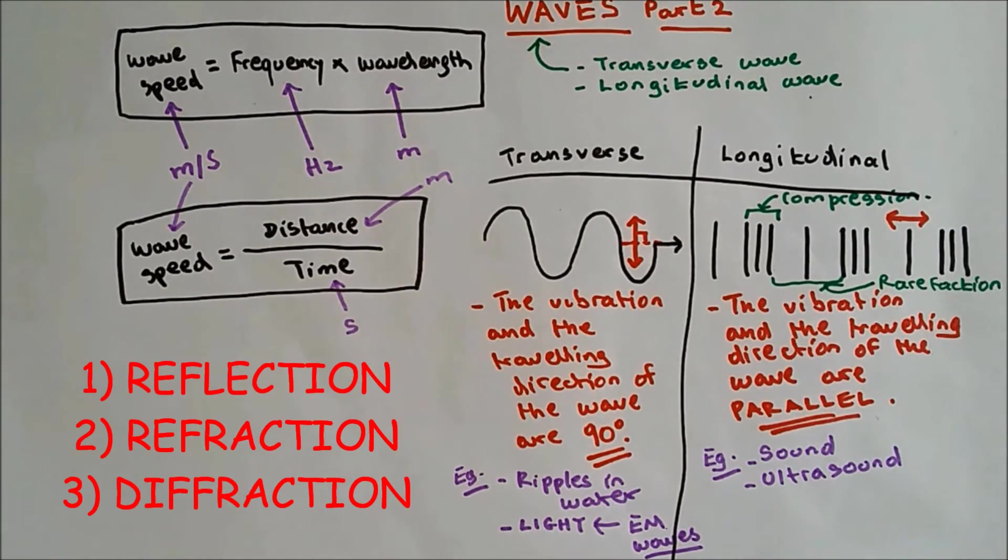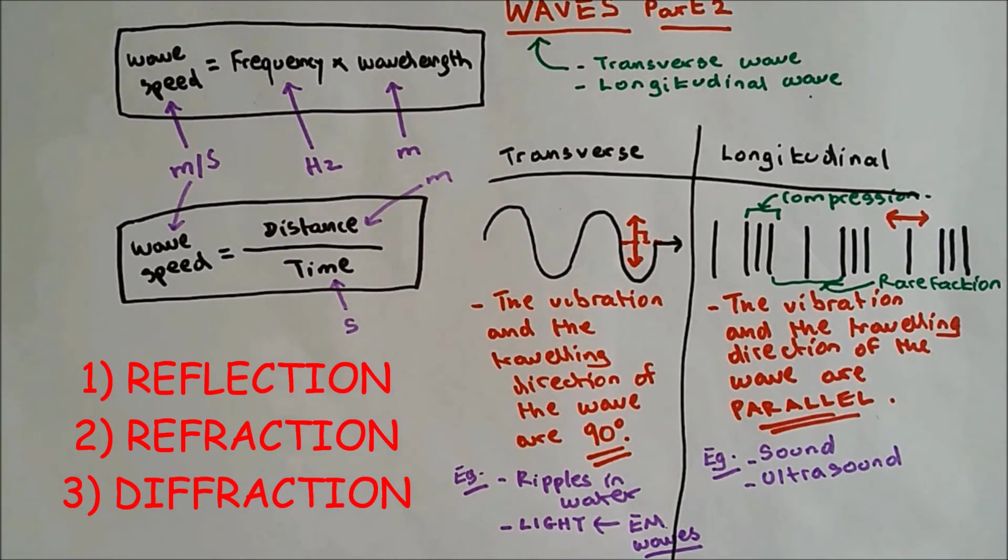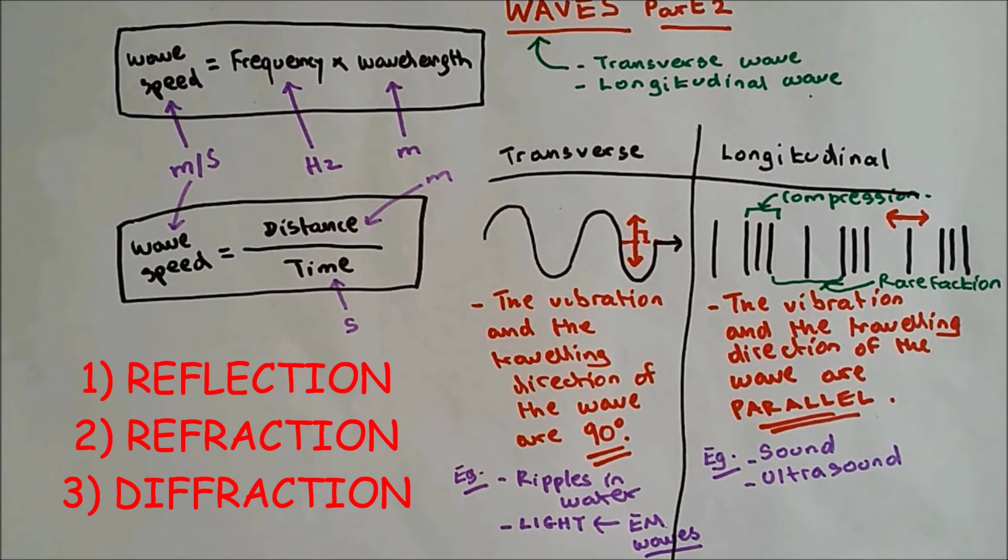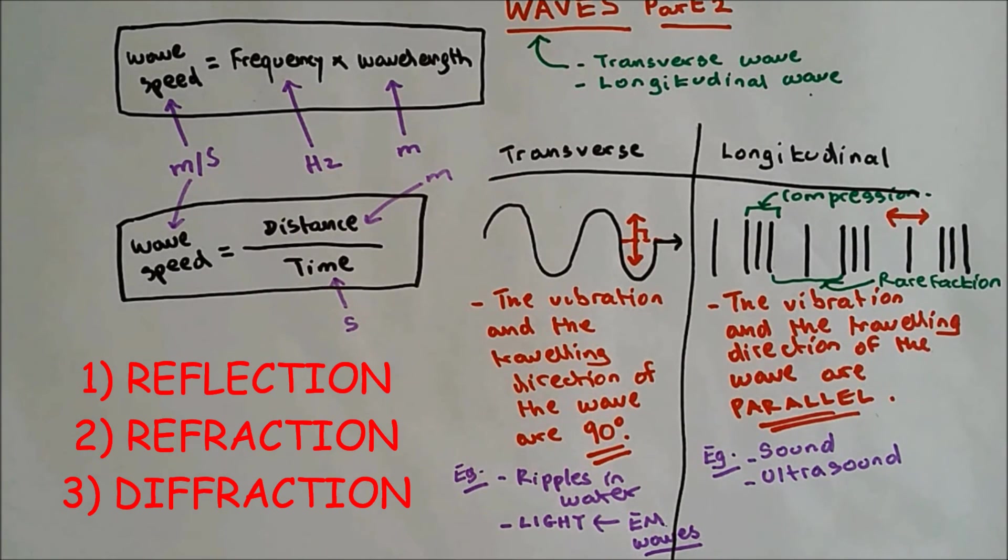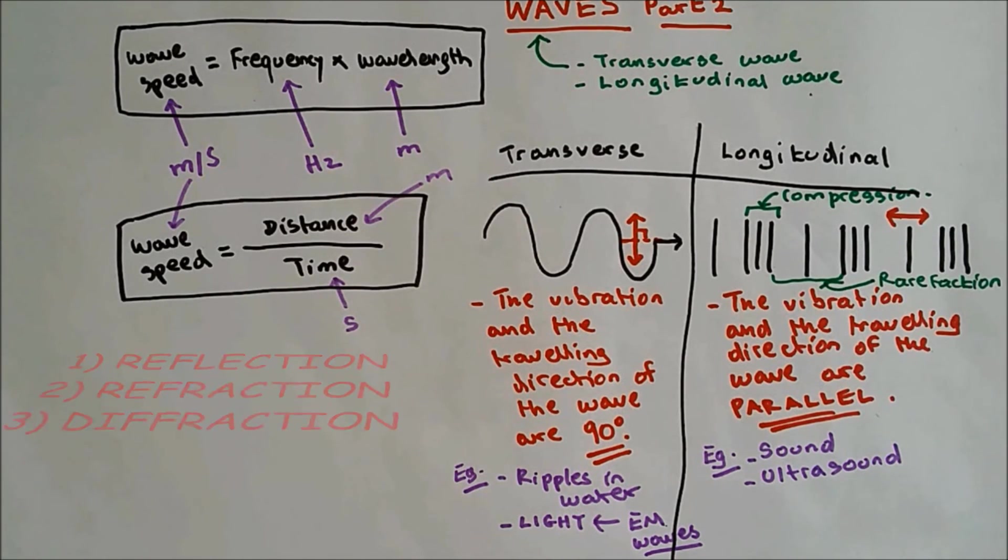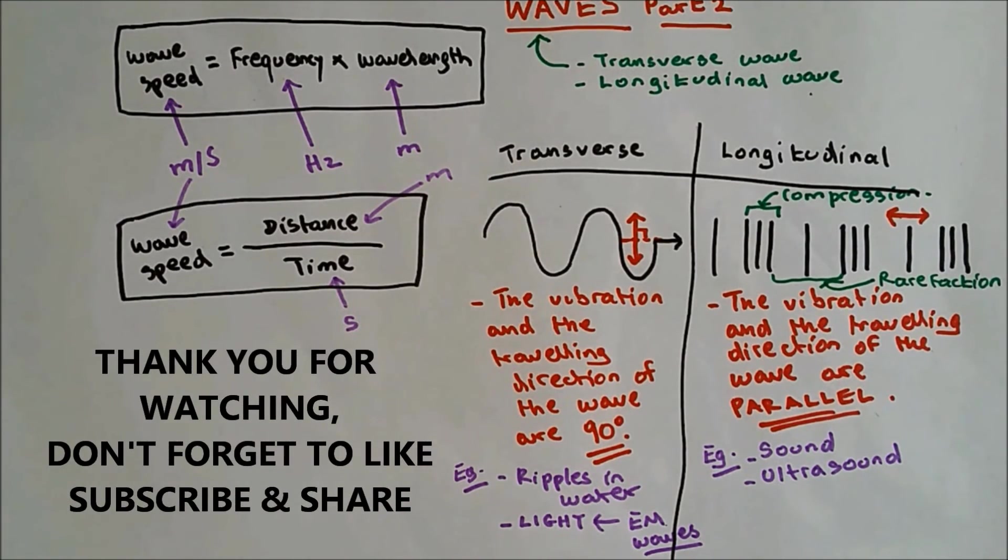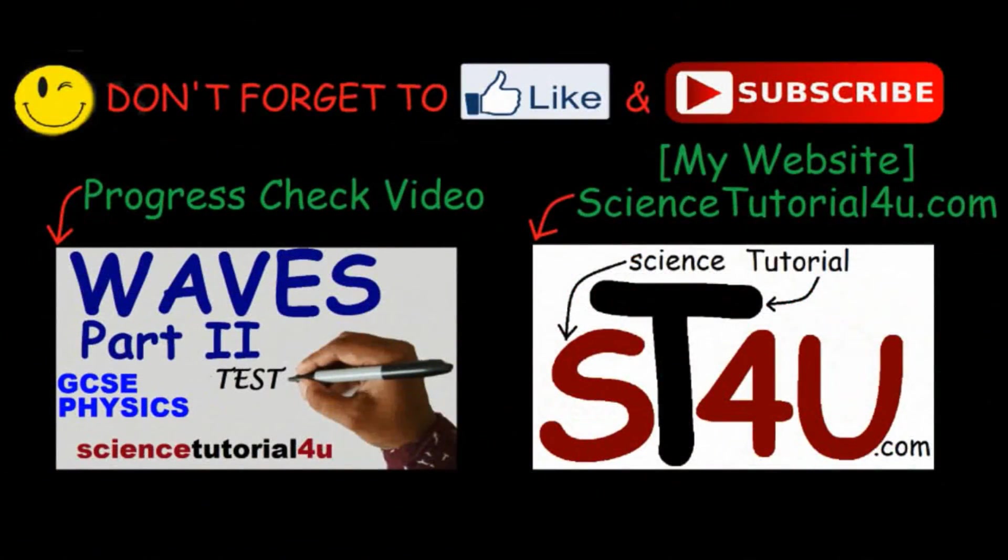Before I finish, I'd like to tell you that waves can interact in three different ways when reaching the surface. They can either undergo reflection, refraction or diffraction. You have to learn these terms. I'll be explaining all this process in details in my future videos. That's all with part two of the waves. Thank you for watching and I'll see you in my next video. Bye.